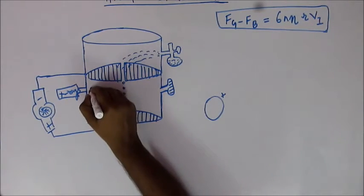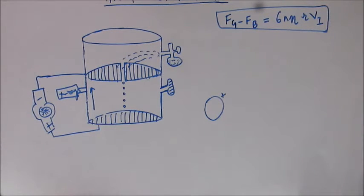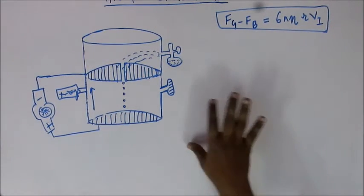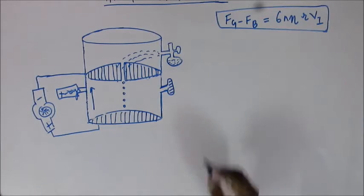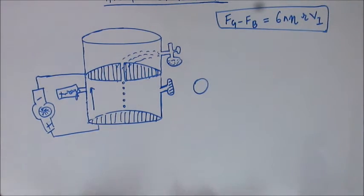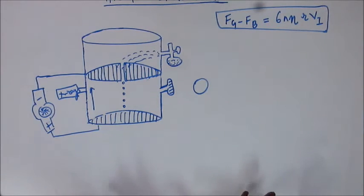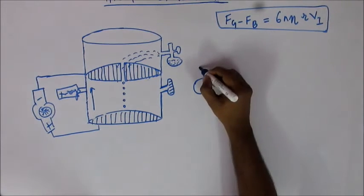The direction of electric field will be from the positive plate towards the negative plate, so the direction of electric field has to be upward. Previously, we discussed that the oil drop will be coming down with a terminal velocity — a constant velocity — due to drag force. Now suppose this oil drop is coming with a constant velocity and suddenly, due to the collision with X-rays, it got ionized. When it got ionized, suddenly a new force — the electric force — will start to appear.